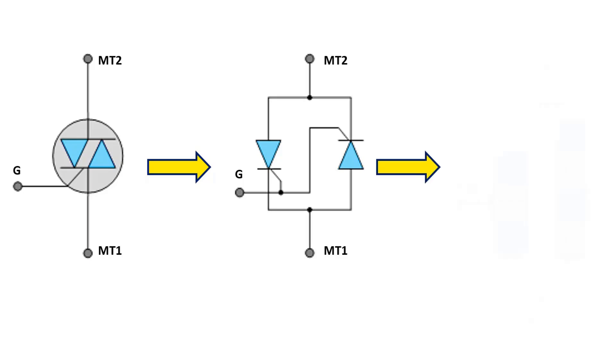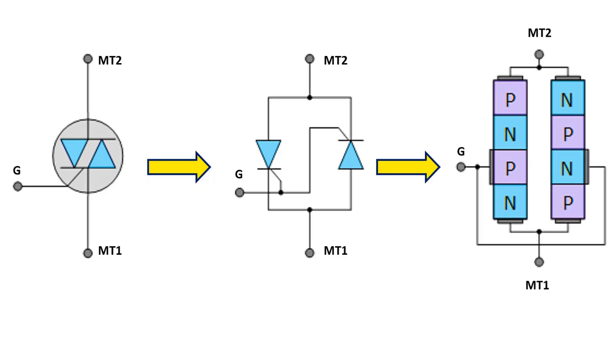In its physical structure, it consists of connecting two structures in the form of PNPN in parallel. Thyristor is used in DC applications as it allows current to flow in one direction.